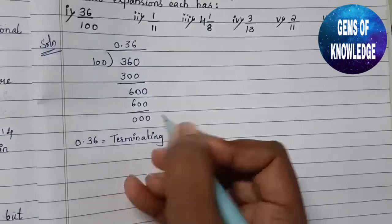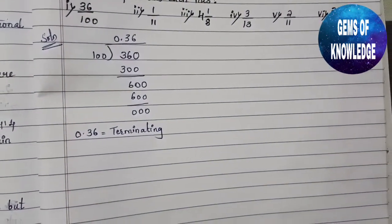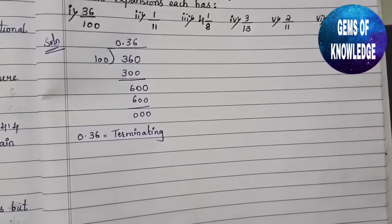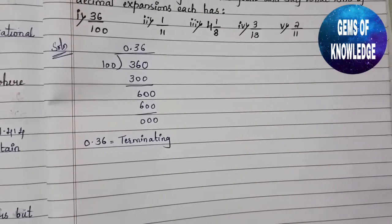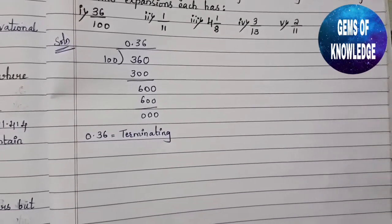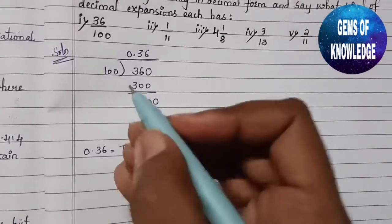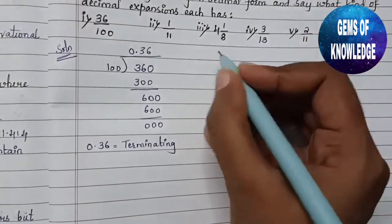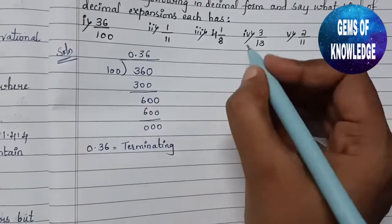If you don't know what terminating, non-terminating, and recurring mean, the definitions are already on my channel. The link will be provided in the description box, or go through the playlist to find all videos regarding the Number System. Now the second question is 1 divided by 11.